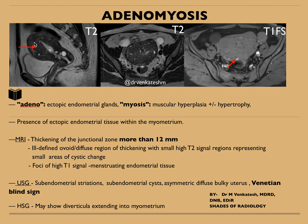Let us first look at the case. This is a sagittal T2 weighted image in the mid-sagittal plane, this is the axial T2 image, and this is the T1 fat sat image. You can clearly see the entire uterus is showing globular enlargement and asymmetric thickening of the anterior and posterior myometrium. You can see multiple tiny cystic T2 hyperintense areas in the sagittal as well as axial images. On the T1 fat sat image, you can see a few T1 hyperintense foci, which are suggestive of hemorrhagic foci — nothing but endometrial glands. So this is a classic case of adenomyosis.